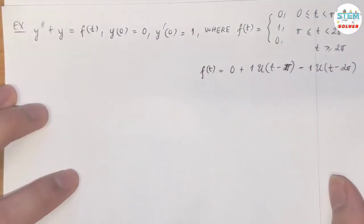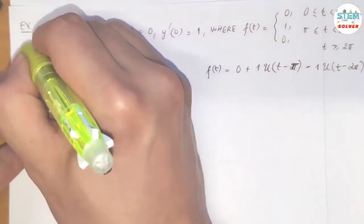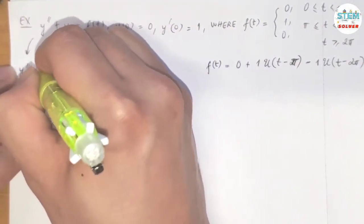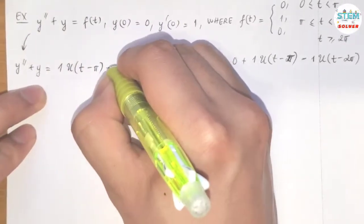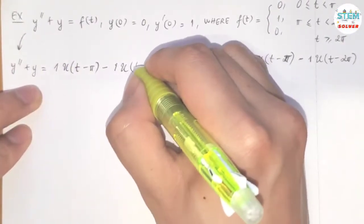And this becomes y'' + y equals, just bring this over, 1·u(t - π) - 1·u(t - 2π).